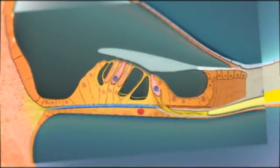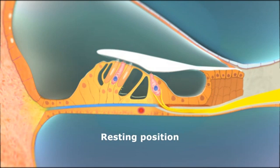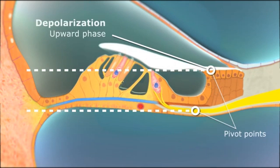The hair cells are located between the tectorial and basilar membranes and are stimulated by the shearing force between the two, caused by the pivot point of the two membranes.